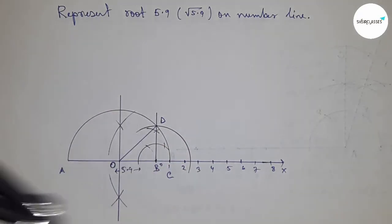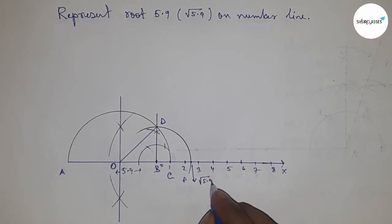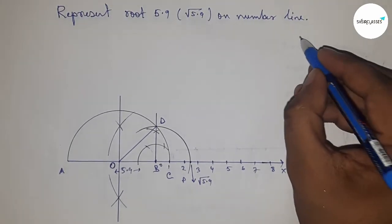The arc cuts the number line at a point, and this is the representation of root 5.9 on the number line.